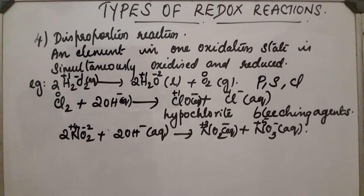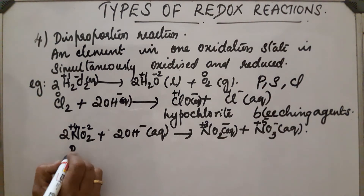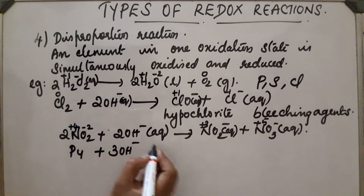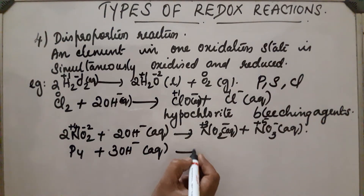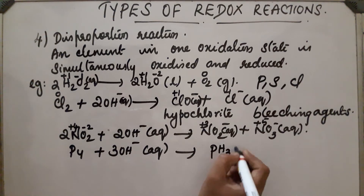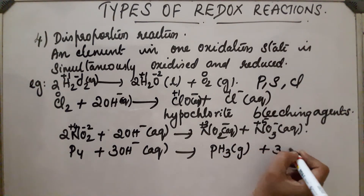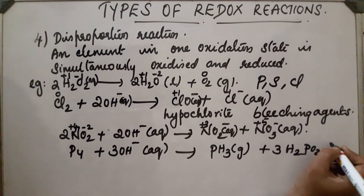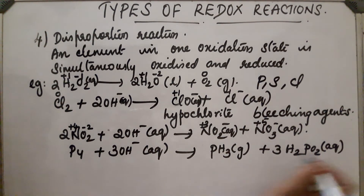Another disproportionation reaction involves P₄: P₄ + 3OH⁻ gives PH₃ plus H₂PO₂⁻.